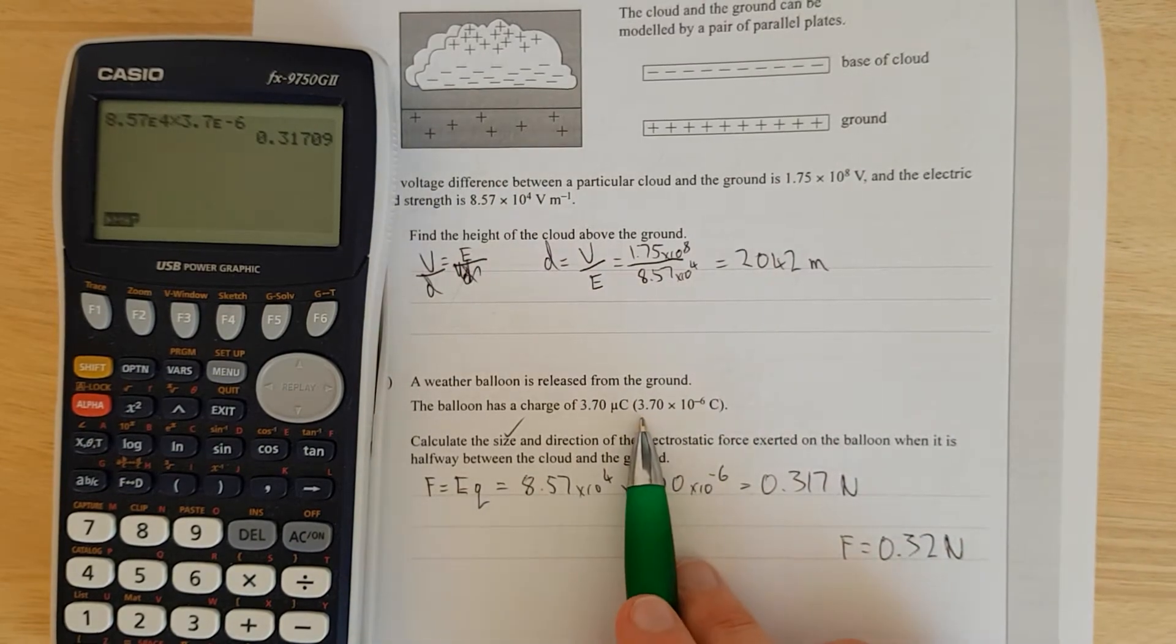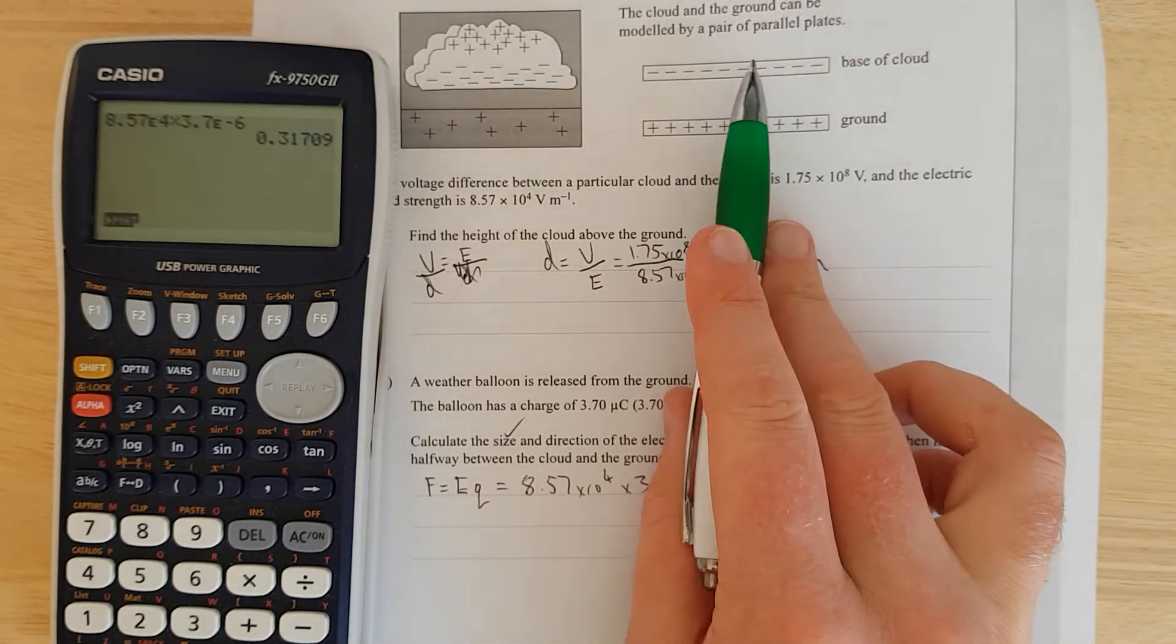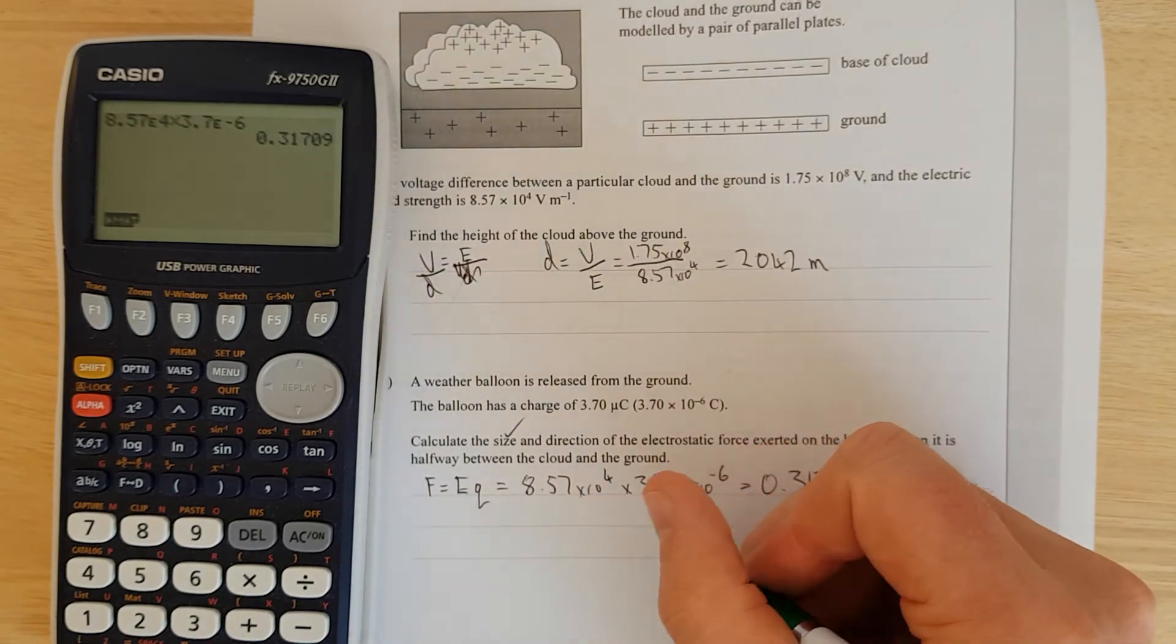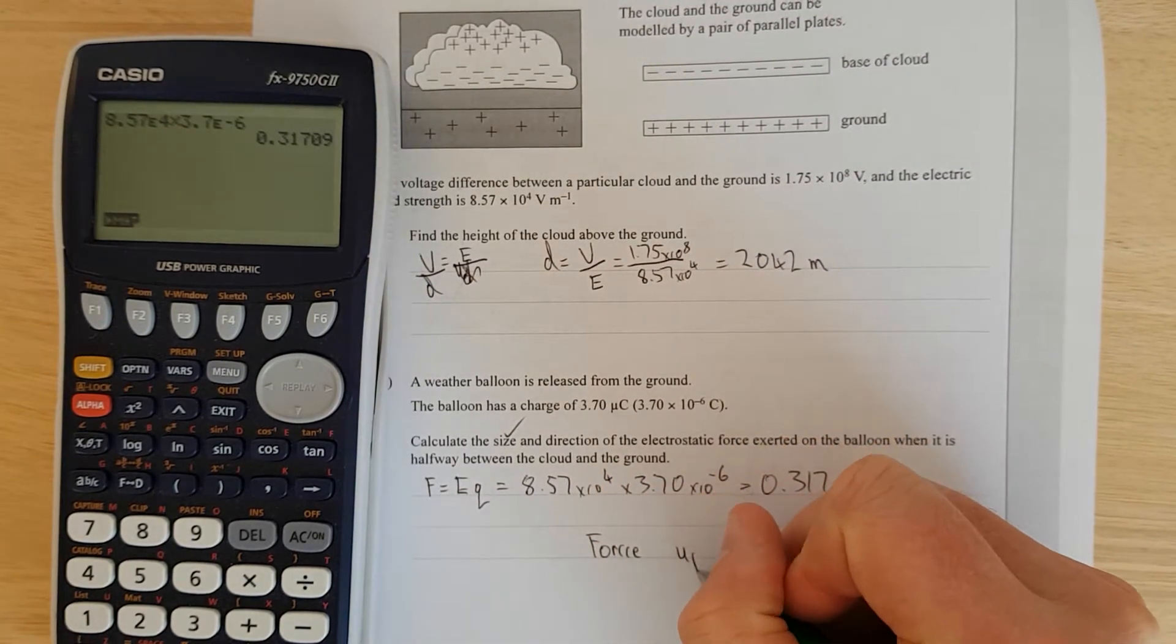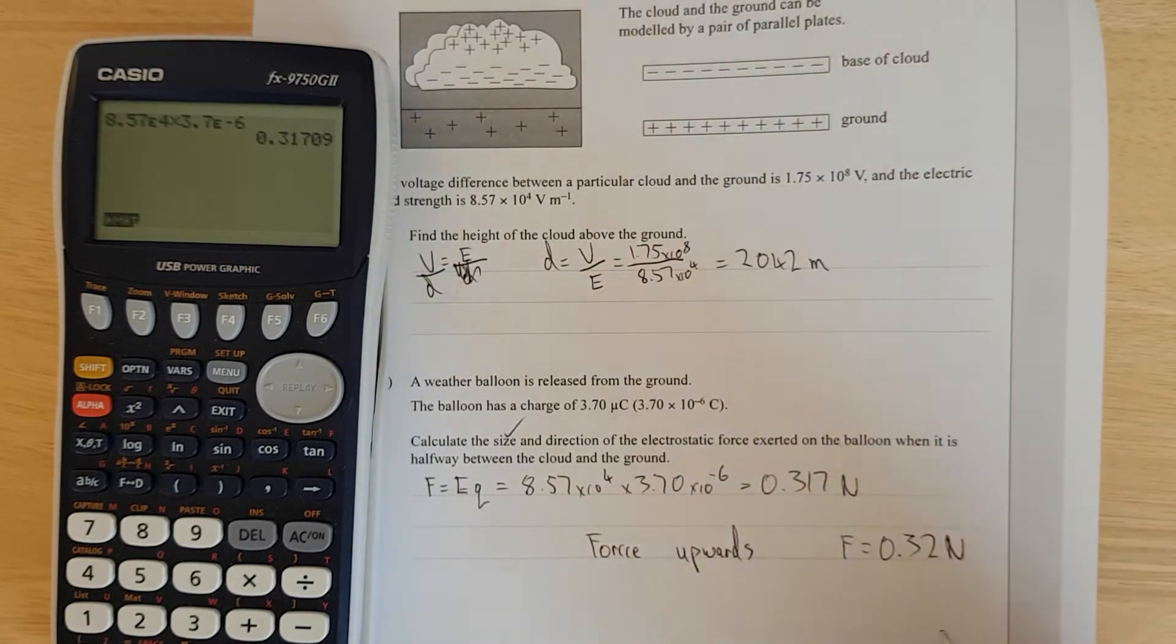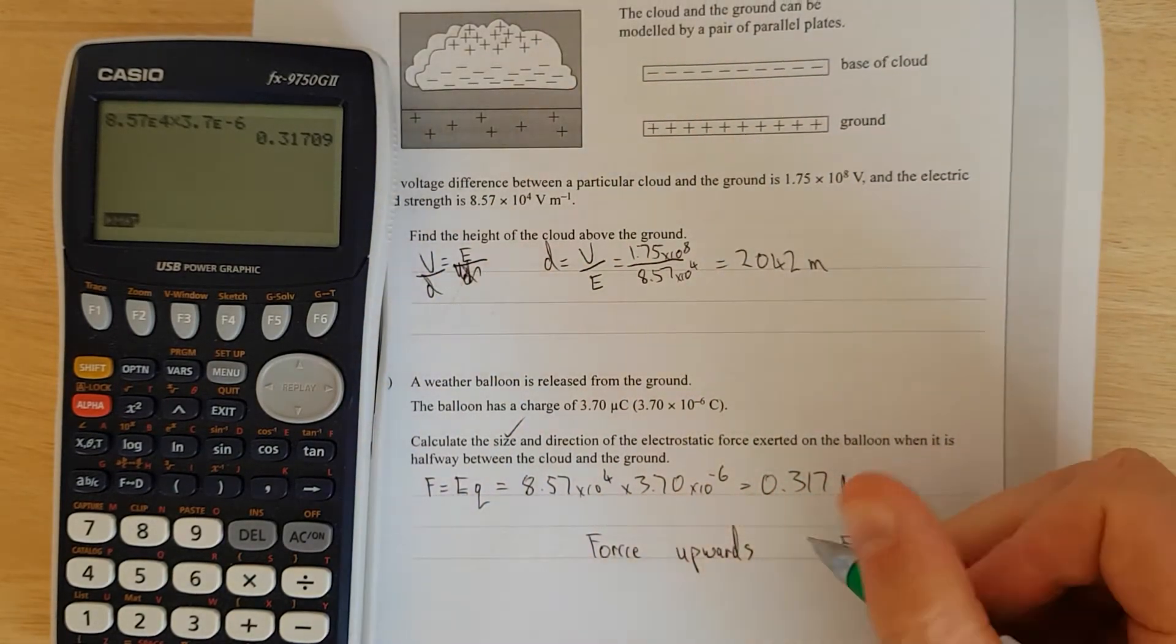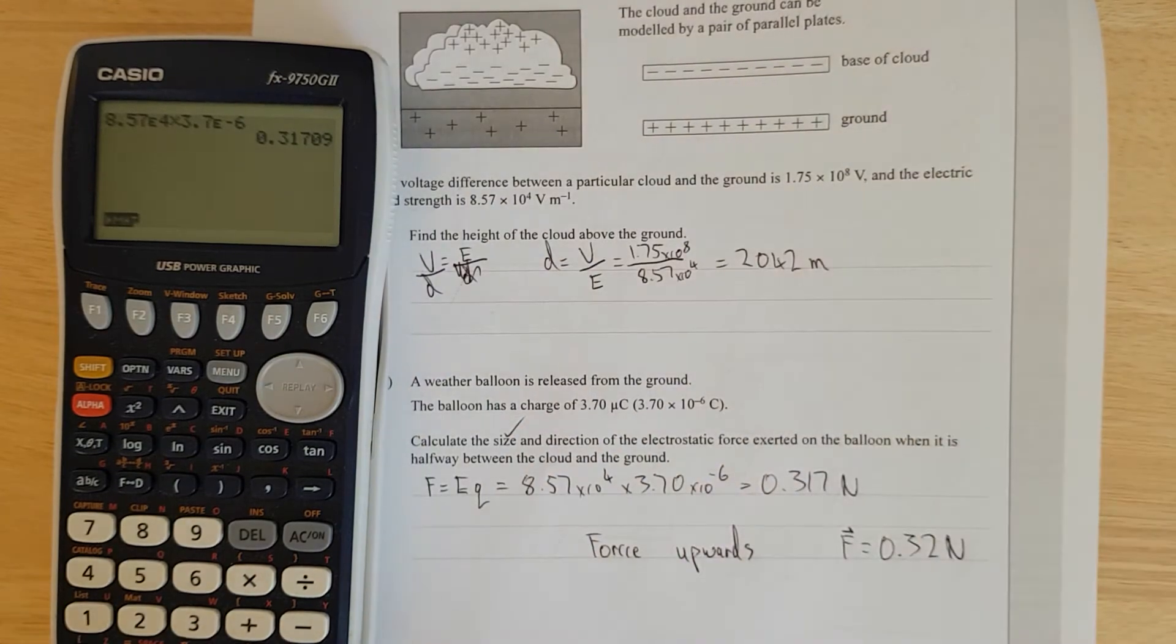This is a positive charge, the ground is positive, the top of the cloud is negative, so it's going to be force upwards. And I'll chuck a vector hat on top because that's a vector.